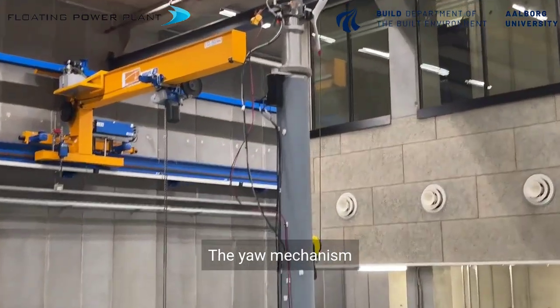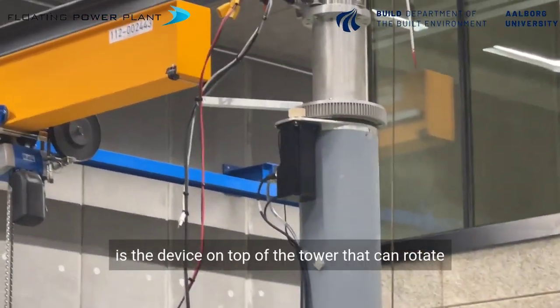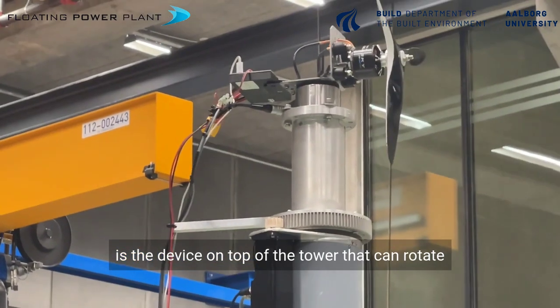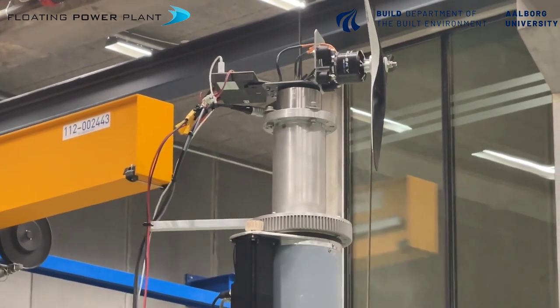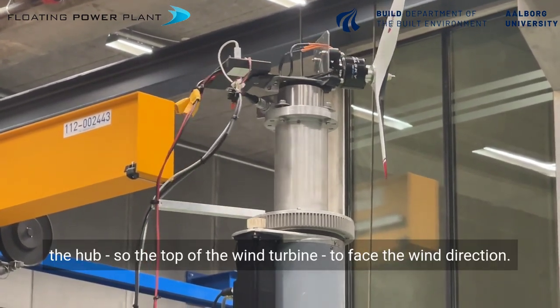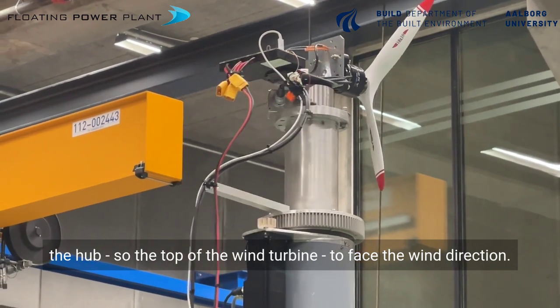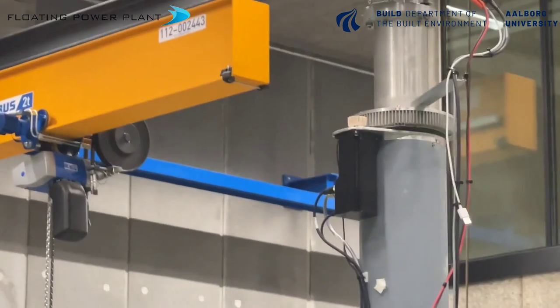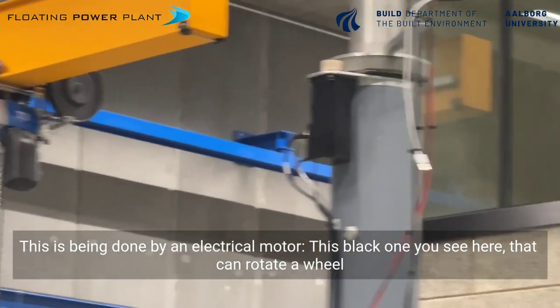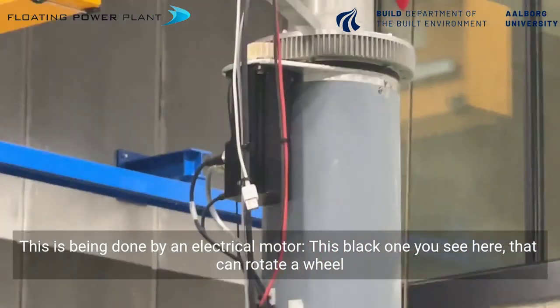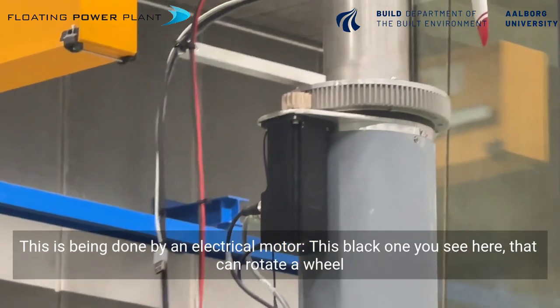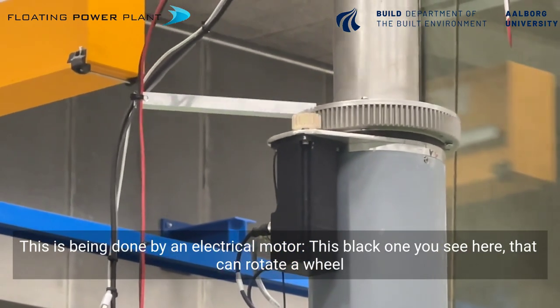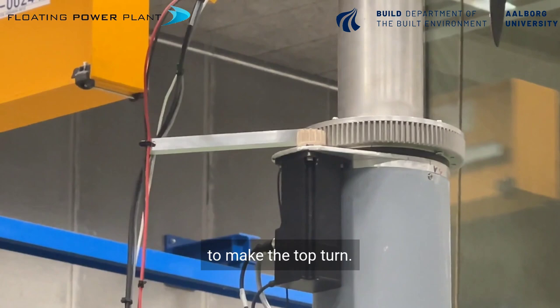The yaw mechanism is the device on top of the tower that can rotate the top of the wind turbine to face the wind direction. This is being done by an electrical motor, this black one you see here that can rotate a wheel to make the top turn.